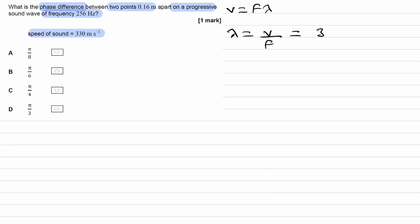Which in this case would be 330, that's the wave speed, divided by the frequency, and this ends up being 1.289 meters.